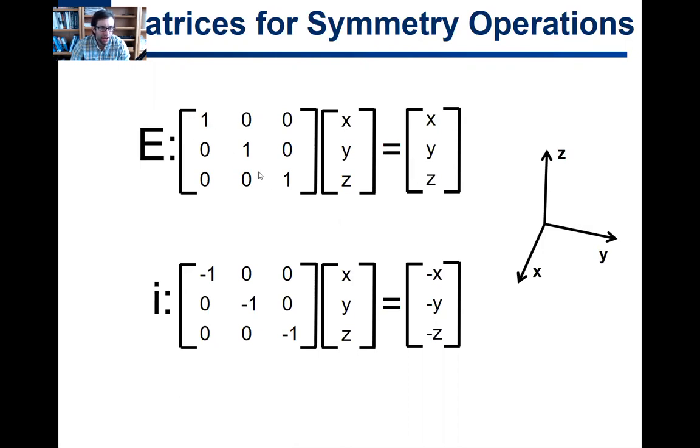So this matrix, you might remember if you've taken linear algebra or something like this, with 1s along the diagonal and 0s on the off diagonal is called the identity matrix. And this is why it does the identity symmetry operation.